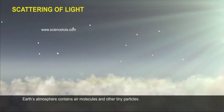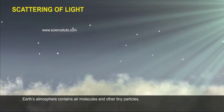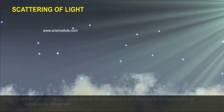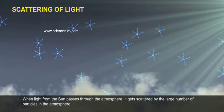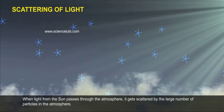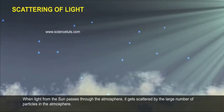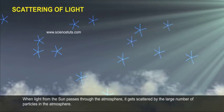Earth's atmosphere contains air molecules and other tiny particles. When light from the sun passes through the atmosphere, it gets scattered by the large number of particles in the atmosphere.